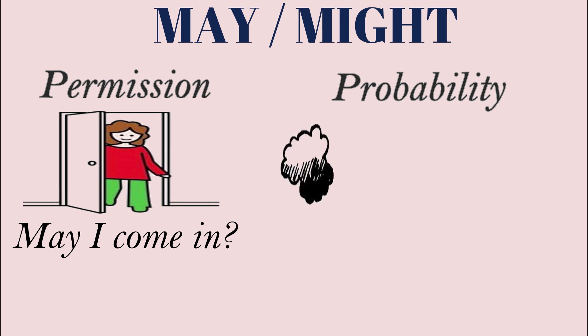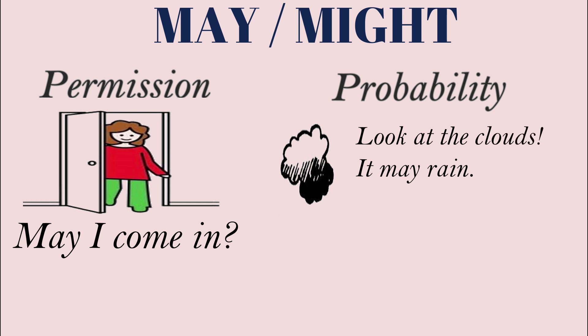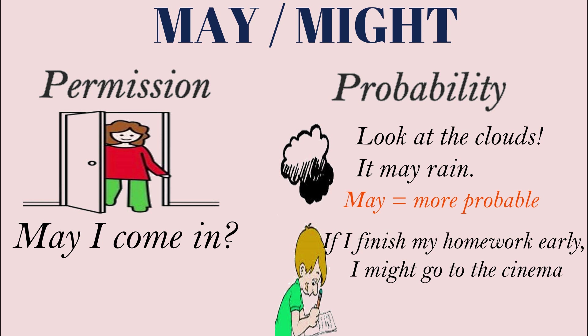Look at the clouds — 'It may rain' is more probable. In the second situation: 'If I finish my homework early, I might go to the cinema' — this is less probable; there is only a very small probability. So 'may' is stronger than 'might' when expressing probability, but both express probability.